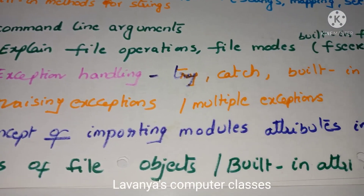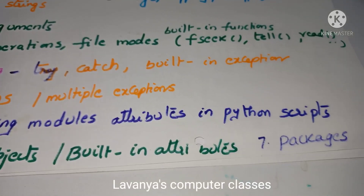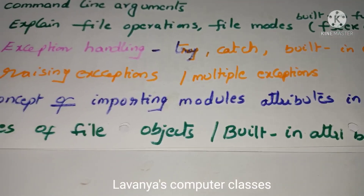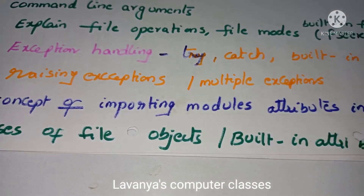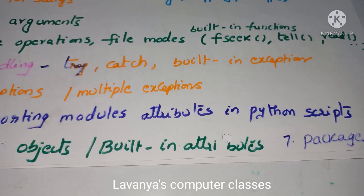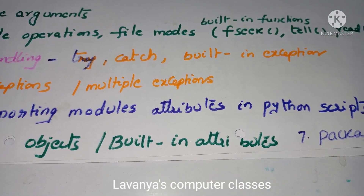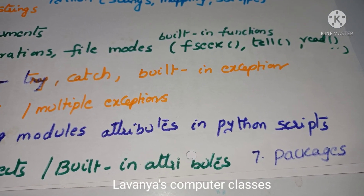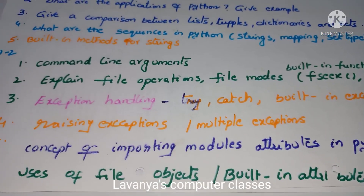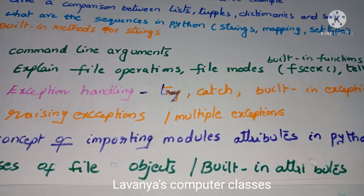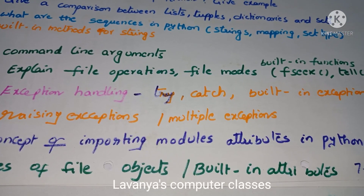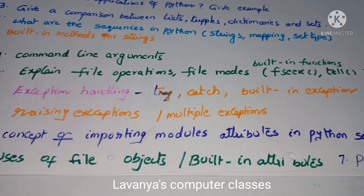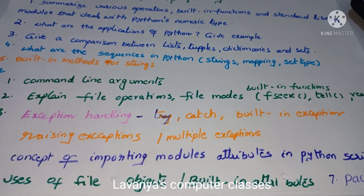Next question: concept of importing modules and attributes in Python scripts. After that: uses of file objects and built-in attributes — read everything in the files. Then read about packages: what is a package and how to create a package. For Unit 2, the important topics are command line arguments, file concepts, file modes, exception handling, reserved words, multiple exceptions, and built-in attributes.